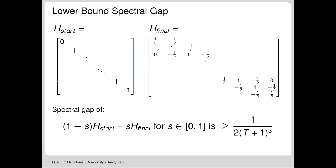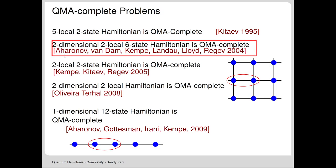Let me say a little about the 2D construction. We have a lot of material and we'll get as far as we get. Lecture four will start on the commuting local Hamiltonian problem. Now let's talk about what was required for the 2D construction. In Kitaev's construction, you had two registers: a computation register and a clock register. Each five-local term applied to two qubits from the computation register and three qubits from the clock.